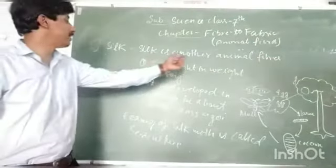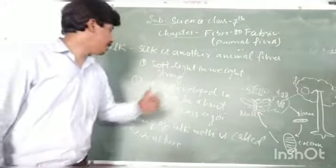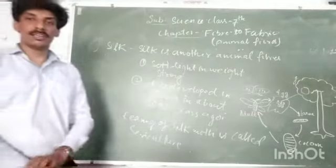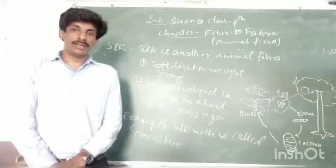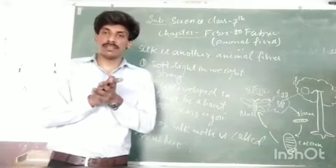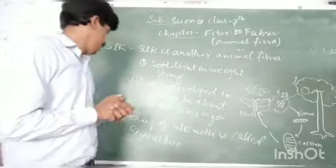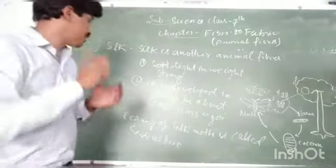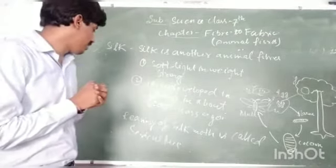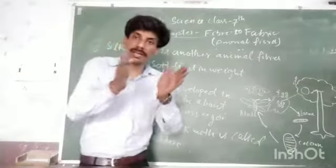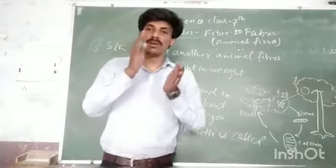Silk is soft, light, strong. It was developed in China about 5,000 years ago. The technique of silk came to India 1,500 years ago. The process of rearing silk worms is called sericulture.